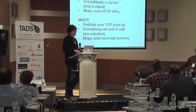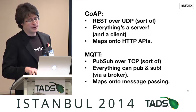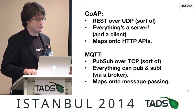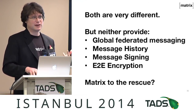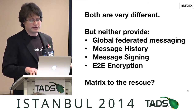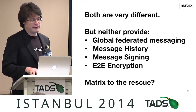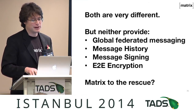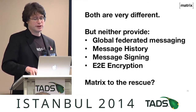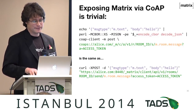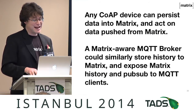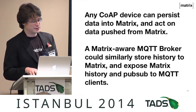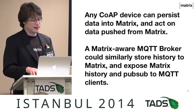What about Internet of Things? Internet of Things protocols — we've got CoAP, which is basically REST over UDP, and MQTT, which is basically PubSub over TCP. Both provide low-bandwidth ways to send messages between devices. None of them provide a global federated approach; none of them have history, signing, or end-to-end crypto. So we hope that, as well as solving the missing signaling protocol for WebRTC, Matrix will help there. Any IoT device can persist data into Matrix, receive data pushed out of Matrix, and likewise for MQTT.